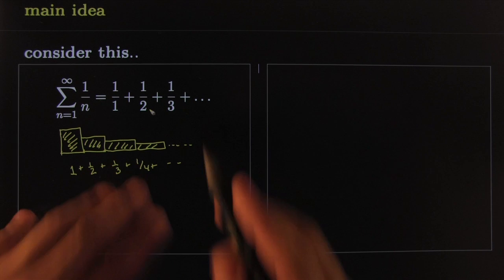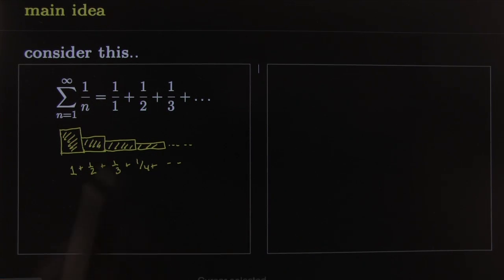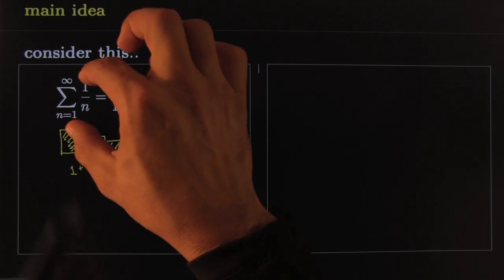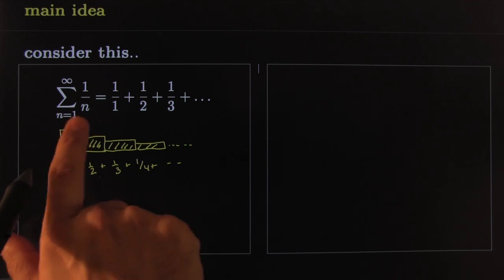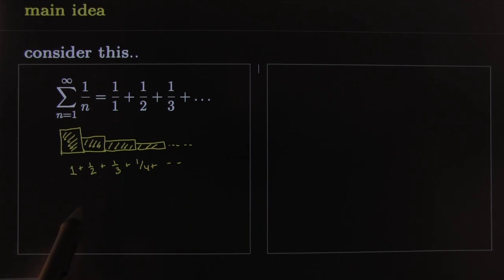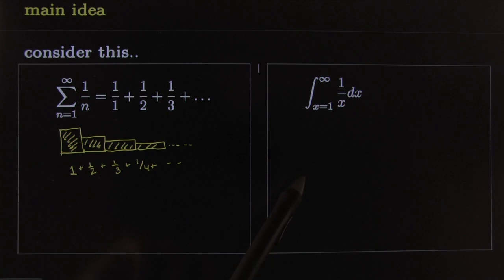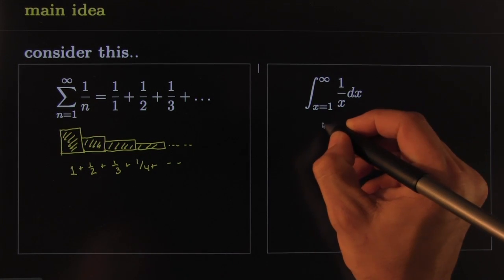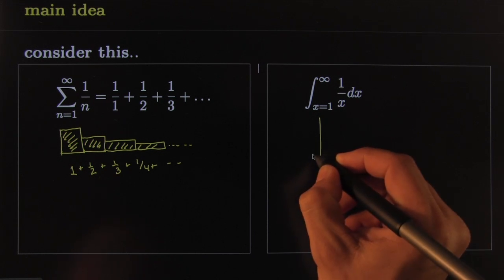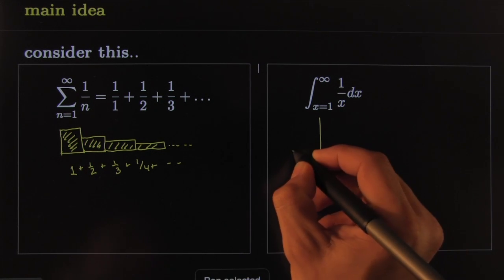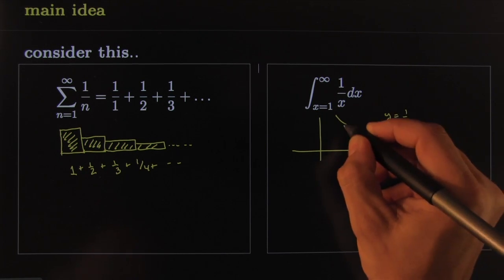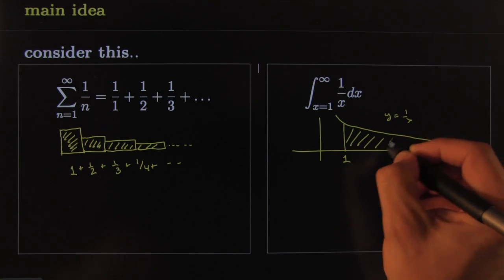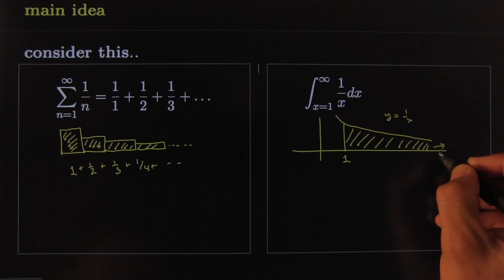This is a good insight because consider this now: suppose you go on and you look at the function, the continuous function version of this sequence. This sequence just hits the integers, whole numbers. What if you hit all the numbers in between? This may look something like this. And if you were to make a picture of exactly what we're adding, it would look something like this: you would make a function and this function is 1 over x, y equals 1 over x. You're starting off at 1 and you're adding all this area, all the way towards infinity as x goes towards infinity.